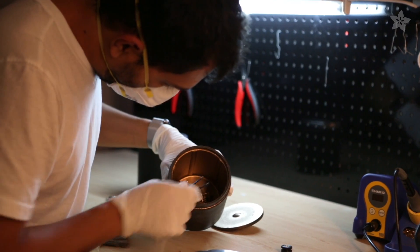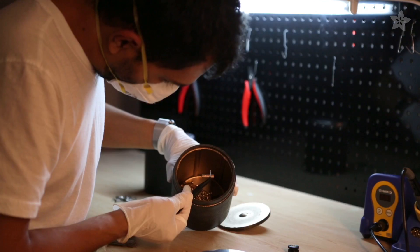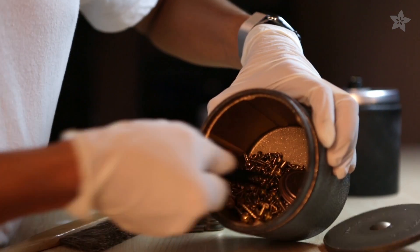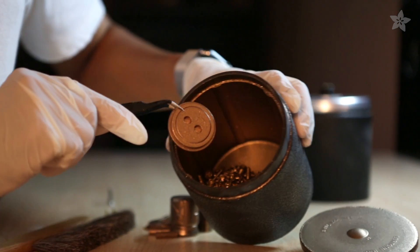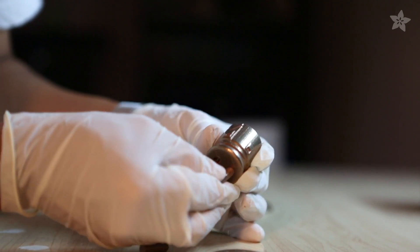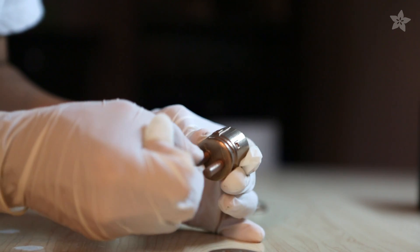You can of course toss the part back in the tumbler if the surface doesn't look fully polished. We actually adjusted the tolerances to about 0.2 millimeter clearance for the parts that need to be connected.